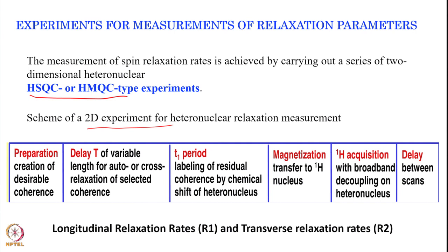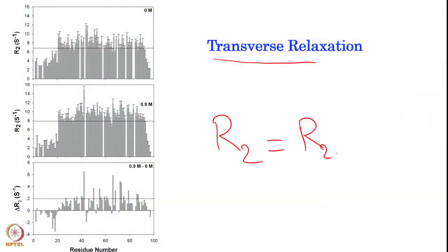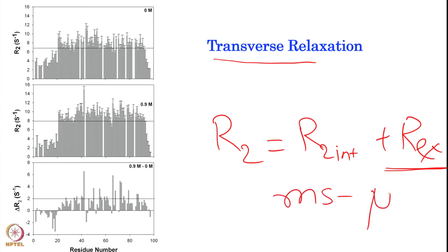Typically, the delay in a relaxation experiment is longer. We already discussed longitudinal relaxation rate R1 and transverse relaxation rate R2. Today we will be focusing on the heteronuclear NOE. Before going to that, we should note that transverse relaxation rate R2 is extremely important for understanding protein dynamics and conformational exchange, because R2 = R2_intrinsic + REX. It also gives information about exchange phenomena occurring in the microsecond-to-millisecond time regime.